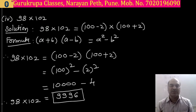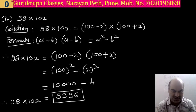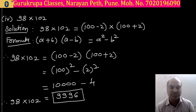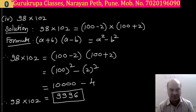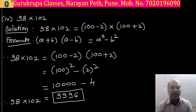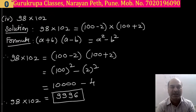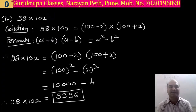I hope that you understood all the sums with their steps. We have solved all the sums on the basis of the expansion formula — that is, a plus b into a minus b is equal to a square minus b square. Remember that in both brackets the first term is the same and the second term is also the same. If they are the same, then only can we use this formula. If you like this video, share it with your friends and subscribe to our channel, Guru Grupa Classes Narayan Paye.